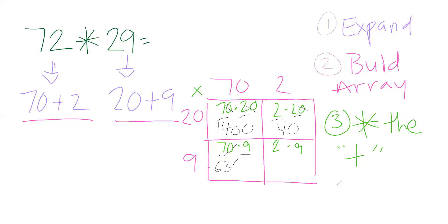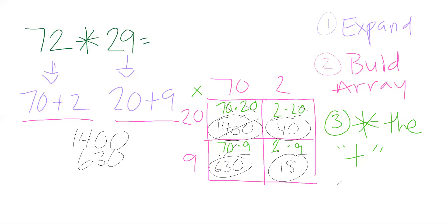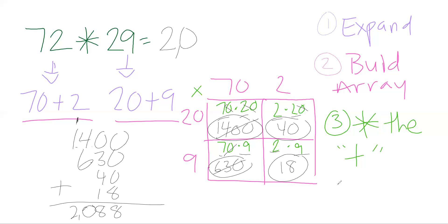2 times 2 is 4 with one zero — that's 40. 7 times 9 is 63 with one zero — that's 630. And 2 times 9 is 18. Now adding: 1,400 plus 630 plus 40 plus 18. Starting in the ones place: 8, then 4, 5, 6, 7, 8 — regroup — giving us 2,088.